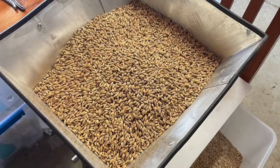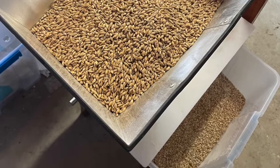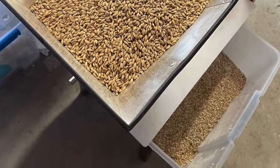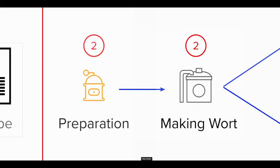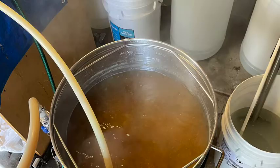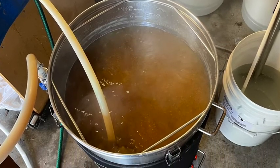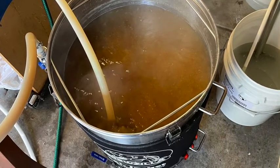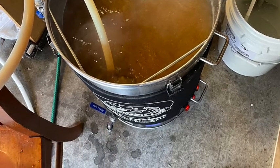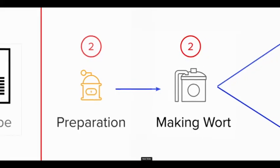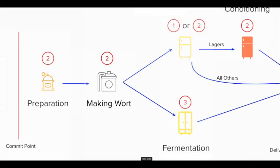To the right of the commit point, we start the preparation of making the beer, which is about crushing the grain and preparing the wort. Next we see the making of the wort, where we've mixed the grain in with the water and started to heat it up and boil it. Once we've made our wort, we move on to the fermentation process.